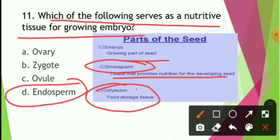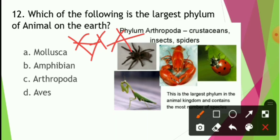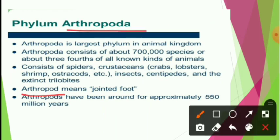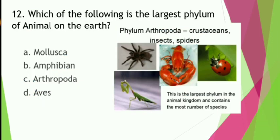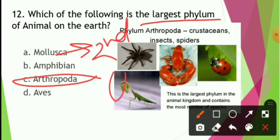Which of the following is the largest phylum of animals on Earth? This is a very important question for railway exams — it has been repeated many times in Group D and ALP exams. Options include mollusca, amphibians, and arthropods. Phylum Arthropoda includes spiders and insects. The word arthropod means jointed legs. Arthropoda is the largest phylum. The second largest is Mollusca, which includes octopus and snails.